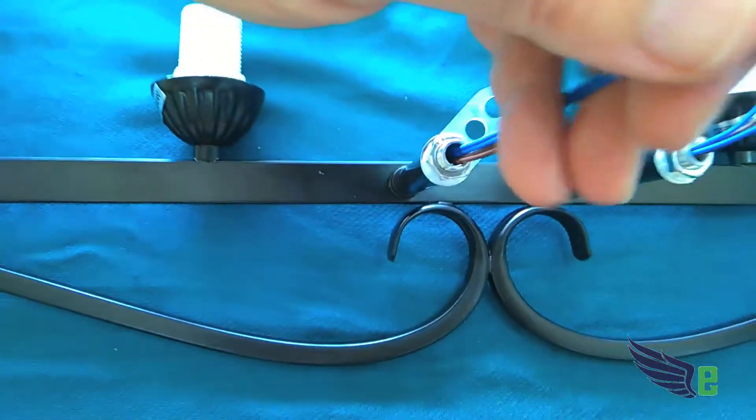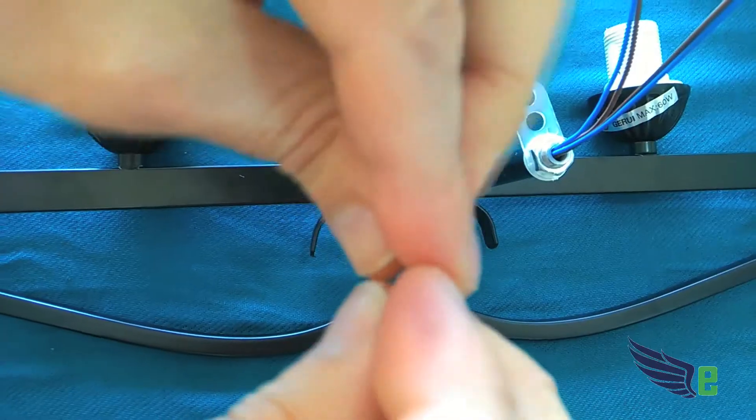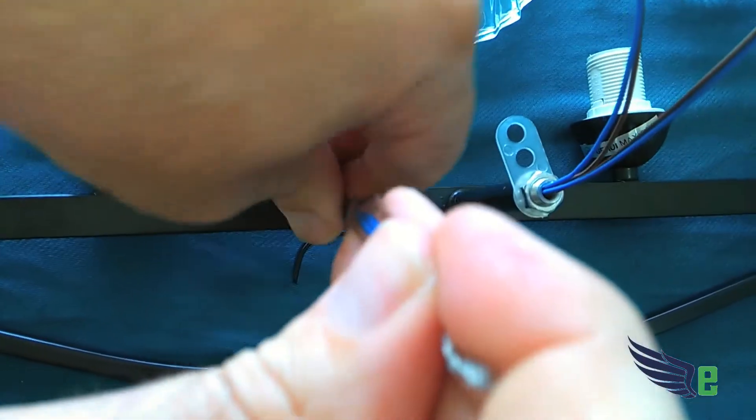Once again, you want to feed that plastic piece back through the safety feature. Put that back in the bolt there.